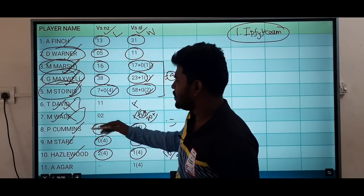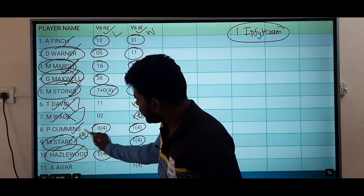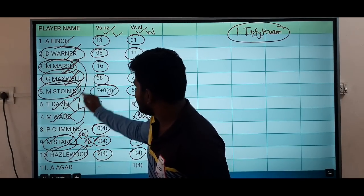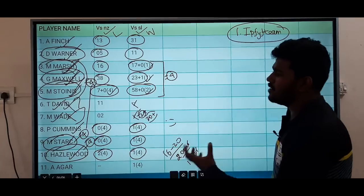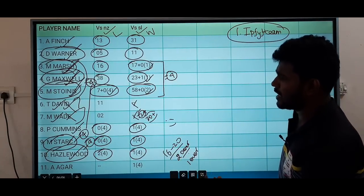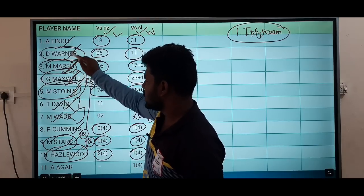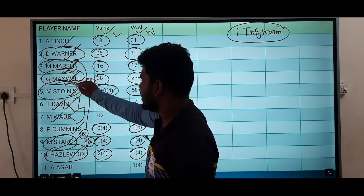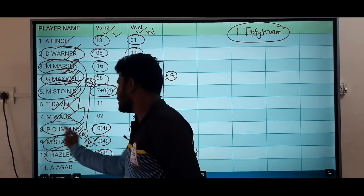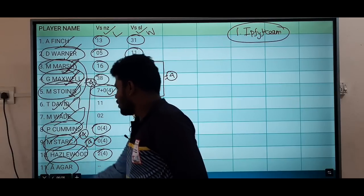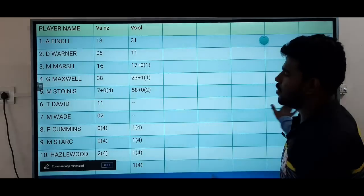There are 4 batsmen in the top order. Starc and Hazlewood are bowling. If we look at Starc and Hazlewood, we are bowling with 3 and 4 batsmen — a total of around 20 batsmen options. If you look at Marsh, Maxwell, and Stoinis versus the opposition, and then Cummins, you will be able to wipe out the batting side. The safe bowling option is Cummins.